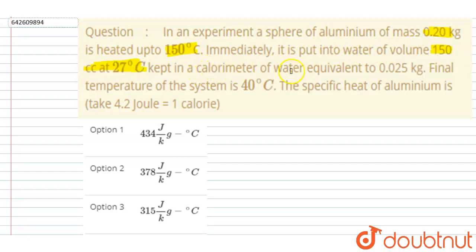Kept in a calorimeter of water equivalent 0.025 kg. Final temperature of the system is 40 degrees Celsius. So you have to find out the specific heat of the aluminum. It is given that 4.2 joule is equals to one calorie.